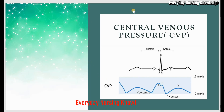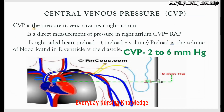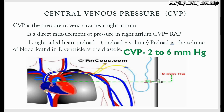Welcome to everyday nursing knowledge lectures. Today we will learn about central venous pressure or CVP. Central venous pressure is the pressure within the vena cava near the right atrium. The right atrium receives deoxygenated blood through the vena cava, so when the CVP measures the pressure in the vena cava, it gives a direct measurement of pressure in the right atrium. CVP is equal to right atrial pressure, and it is also the right-sided heart preload.